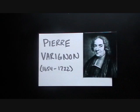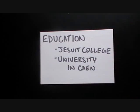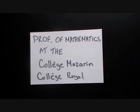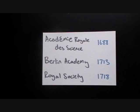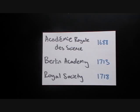A little background information on the person who came up with this theorem. His name was Pierre Varignon. As you can tell by his name, he was a French mathematician. He lived from 1654 to 1722. He was educated at Jesuit College and the University in Caen. He was a professor of mathematics at the Collège Mazarin and the Collège Royale. He was a member of several important academic societies, like the Académie Royale des Sciences, the Berlin Academy, and the Royal Society. Being a member of the Royal Society, he was friends with Isaac Newton, as well as Leibniz and the Bernoulli family, and was obviously a very well-respected and important mathematician.